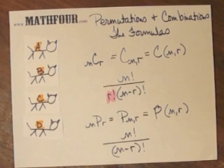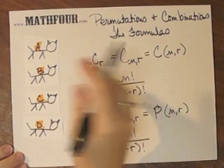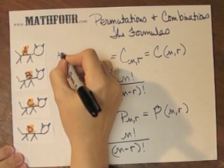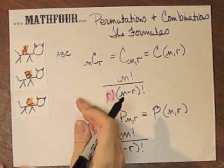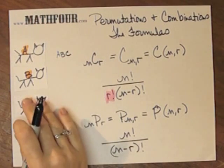then I have the possibility of, for combinations, A, B, C, right, those three. I could do A, B, D.